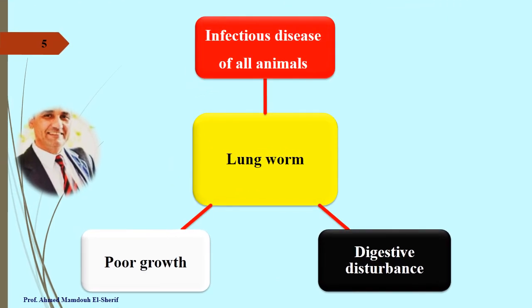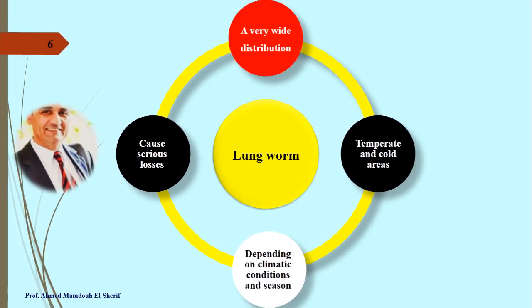Lung Worm is an infectious disease of all animals characterized by digestive disturbance and poor growth. It has a very wide distribution all over the world, especially in temperate and cold areas, and its presence depends upon the climatic condition and season. This disease causes serious losses among infected animals.